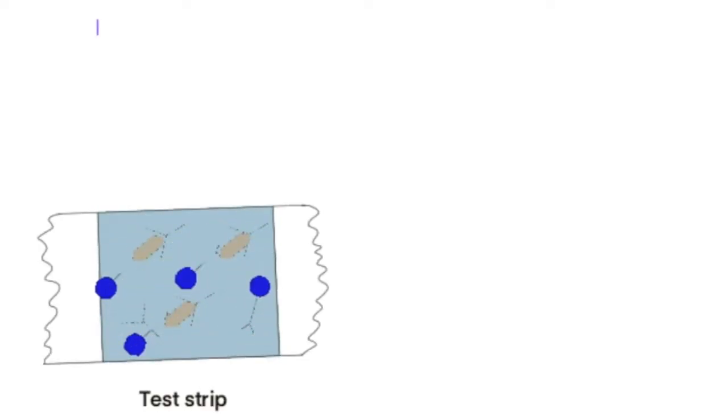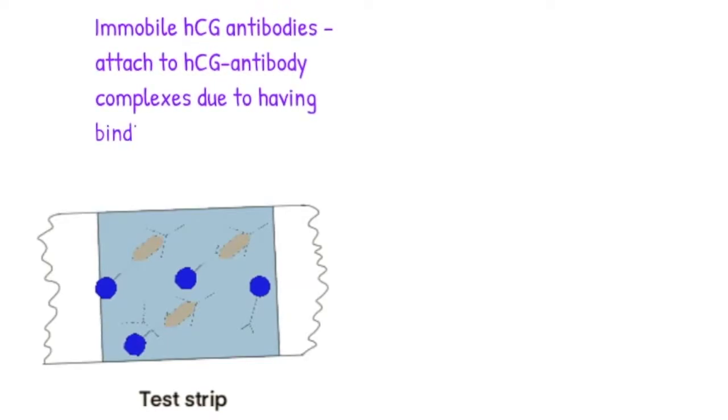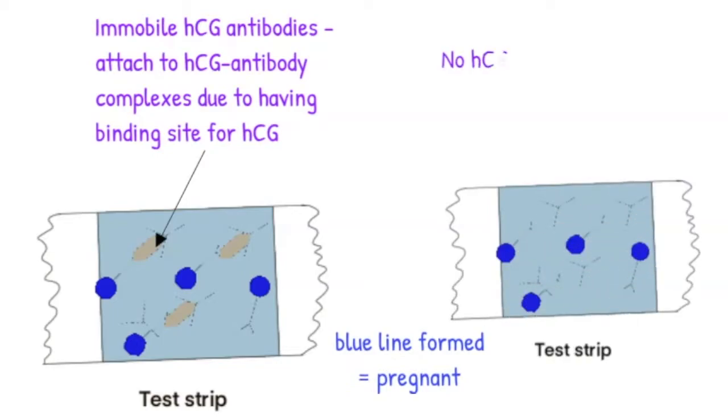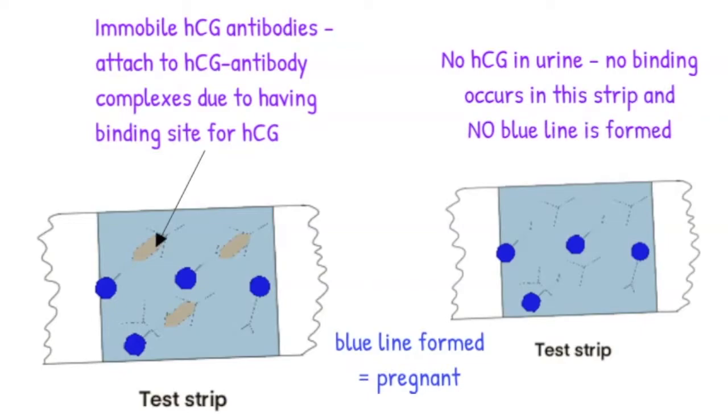Next, the urine comes across the test strip. Here there are immobile HCG antibodies. They are fixed in place so cannot go anywhere. Any HCG antibody complexes formed in the mobile antibody area will bind to the immobile antibodies as their binding sites are also specific to the HCG molecules. This forms the well-known blue line showing the lady is pregnant. If there were no HCG molecules in the urine, no HCG antibody complexes are being formed and there is no binding here.